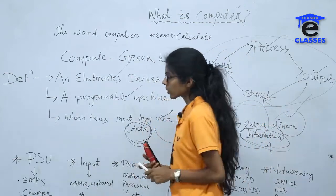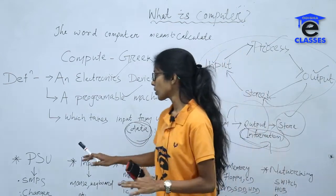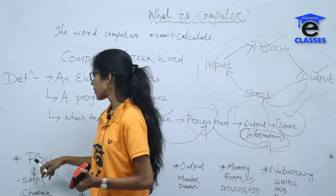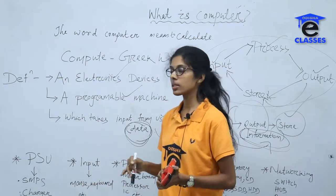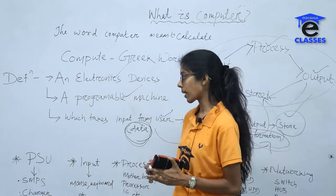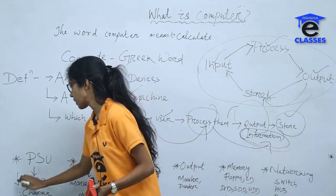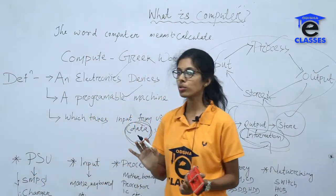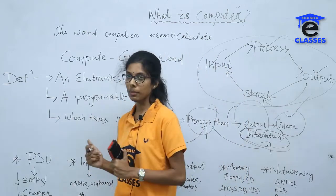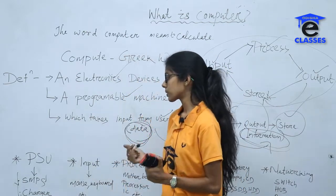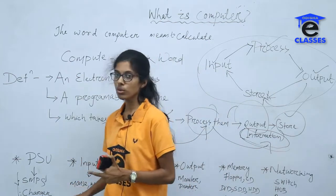We can divide the computer into units. First is PSU — Power Supply Unit. As it is an electronic device, we must have a power supply to operate it. For that we need SMPS, which can use 220V or 240V electricity and convert it for the machine to use. A charger is also used to charge the device.